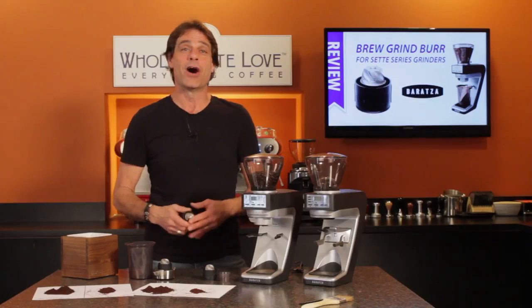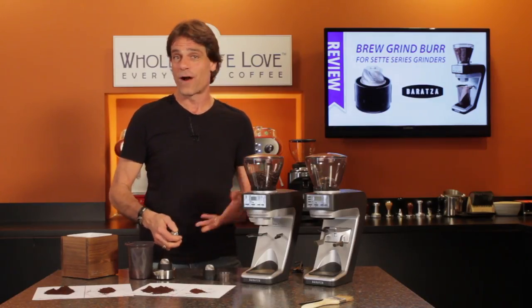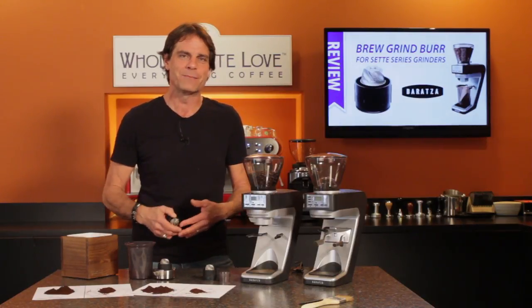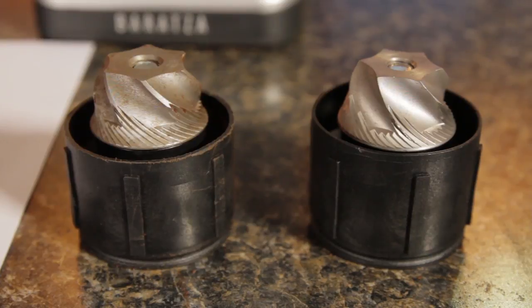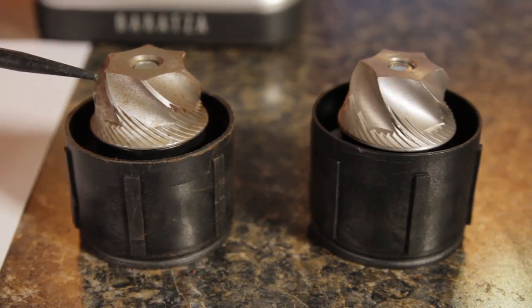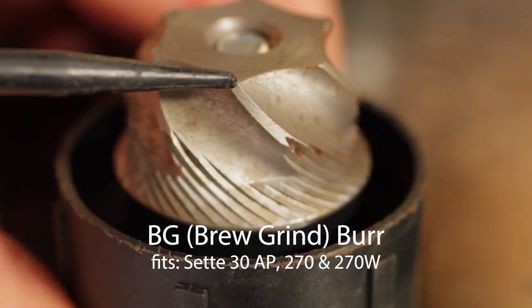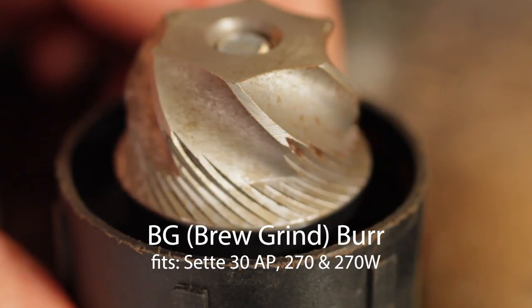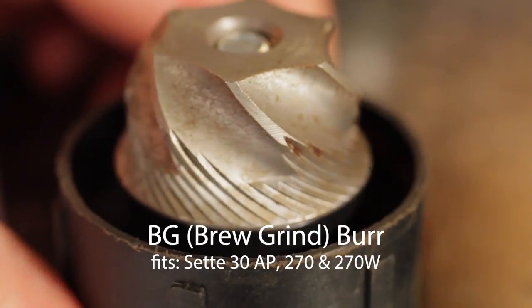So how to tell the AP all-purpose burr apart from the BG brew grind burr? From a distance, they look fairly similar, but look close and you'll see the upper teeth are flatter on the BG Burr. It's that cutting surface change which yields a grind quality more suited to brewing methods using medium and coarser grinds.